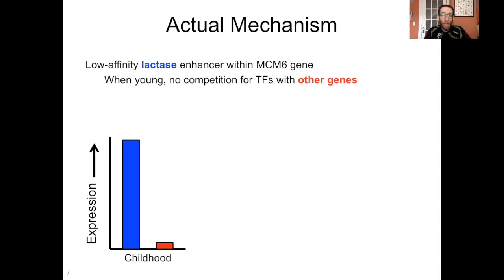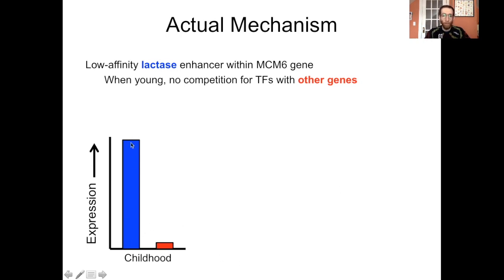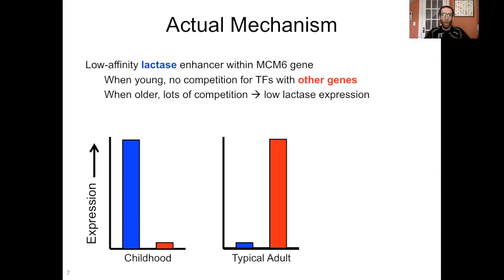Basically, the way this works is that there is a low-affinity lactase enhancer within the MCM6 gene. An enhancer is a site that transcription factors bind to, and when they do so, it increases the expression of the associated gene. So within that MCM6 gene upstream, you have an enhancer, and when transcription factors bind to it, it increases the expression of the nearby lactase gene. This is a low-affinity enhancer — it doesn't very efficiently attract those transcription factors. When you're young, that's not a problem because your other metabolic pathways are not all that active, so there's no competition for those transcription factors with other genes, and during childhood you get lots of lactase expression. Typically in adulthood, as other metabolic pathways come online, you have stiff competition for transcription factors, so this low-affinity lactase enhancer loses out and you don't have lactase expression as an adult.